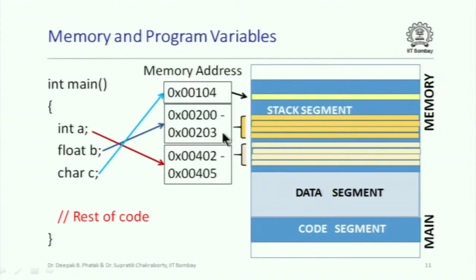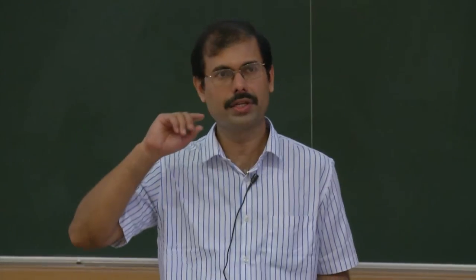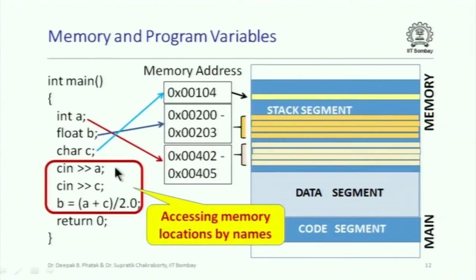We can think of addresses for these different memory locations. One byte allocated for the character could have a memory address written in hexadecimal. There are 4 bytes for float, with corresponding addresses hex 200 to hex 203. For the integer, there are 4 bytes. Note: it is not necessary that because A is declared before B and C, the memory address of A would be less than that for B or C. We should not make any such assumptions. When we write code to read something and store it in A, we are accessing those memory locations by their name.